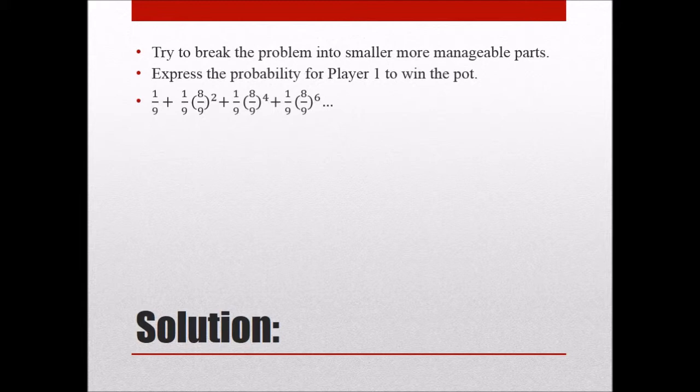So think about that for a minute. Because what that basically is saying is that he didn't get it on the first try so he passed the dice to player two. Player two didn't get it and now he rolls and he gets it. So that's the probability for him getting it on his second roll. And then you can see on his third roll that it means that he didn't get it on the first,